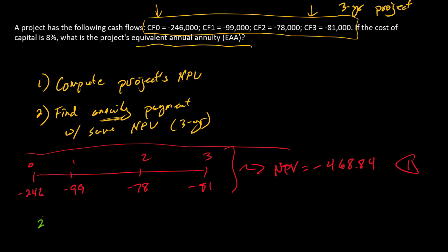Step two, then, is to find the annuity payment. Again, we're going to think about a three-year annuity with some payment. We're going to keep the discount rate the same as before in this calculation. We need to set the present value equal to that number right there. So minus 468.84 is the present value of what three-year annuity?